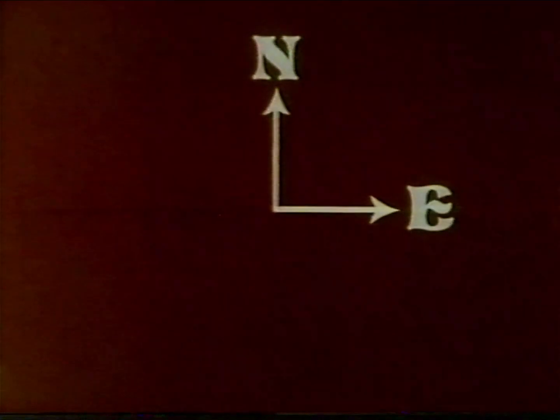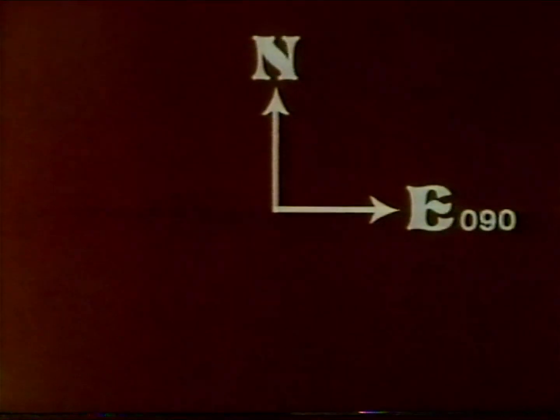For maps and charts, the direction north is usually towards the top. Other directions are measured clockwise in degrees from north: 090, 180, 270, 360.